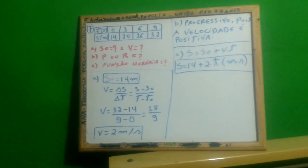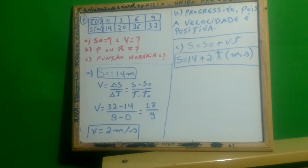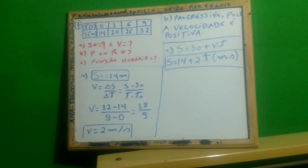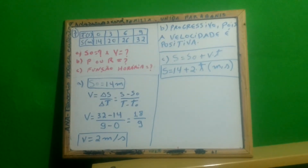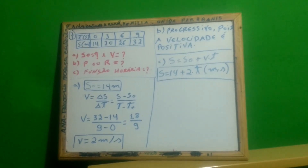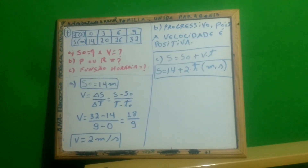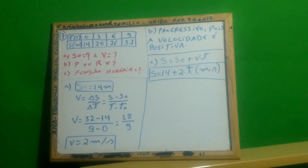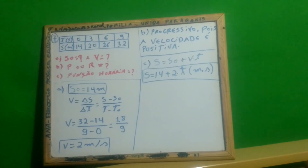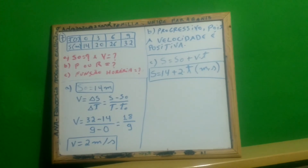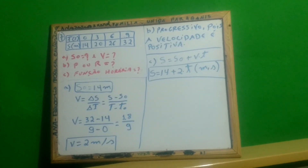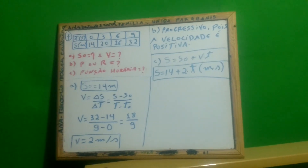Na letra C, a questão está perguntando a função horária. A função horária é S igual a S₀ mais Vt, onde você precisa saber a posição inicial e a velocidade. A posição inicial foi 14 metros e a velocidade 2 metros por segundo. Então, a função vai ficar S igual a 14 mais 2t, onde as unidades estão em metros e em segundos.